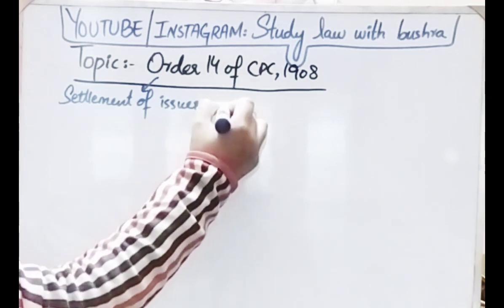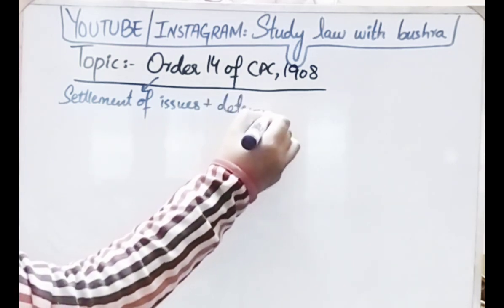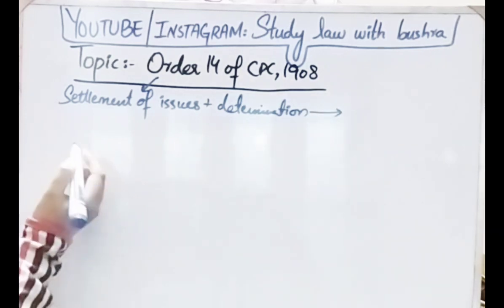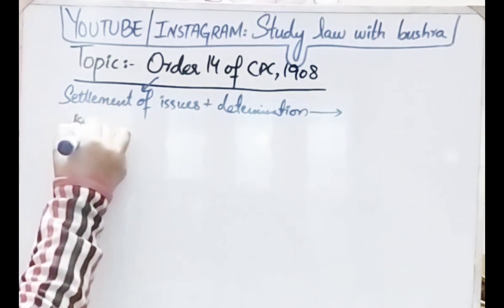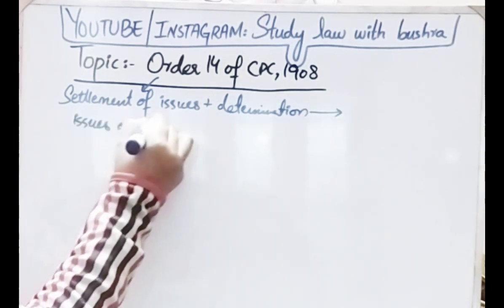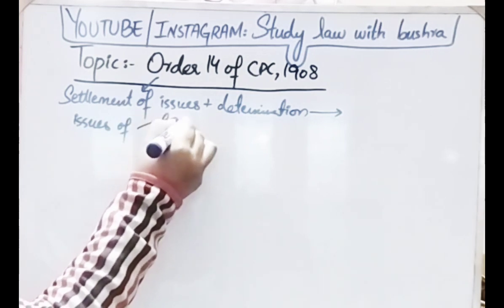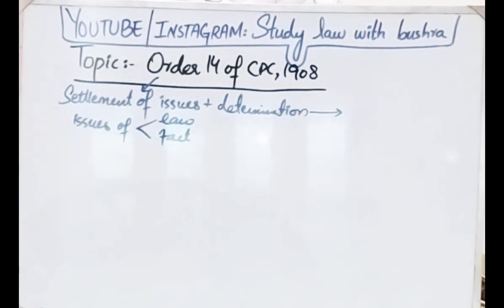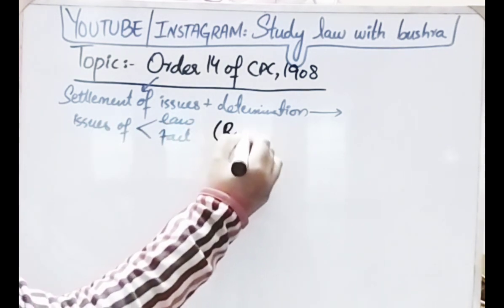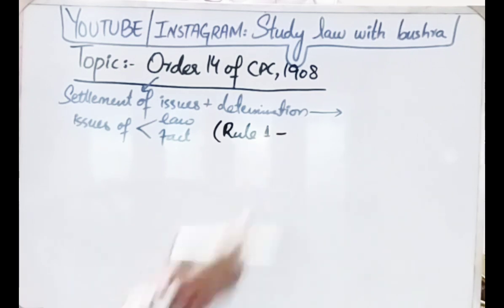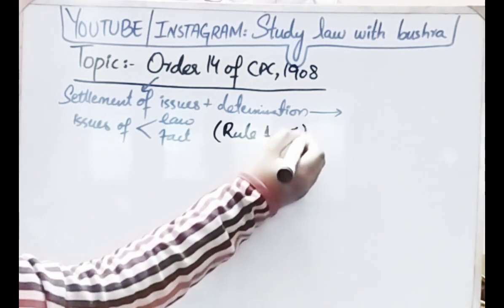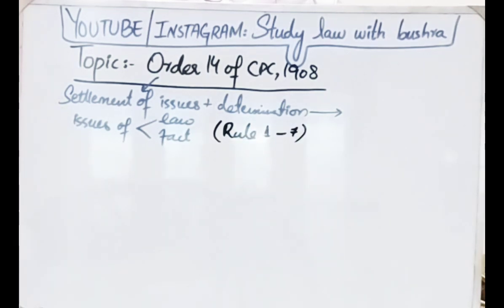Order 14 of CPC deals with the topic of settlement of issues and determination of suit on the issues of law or on the issues agreed upon. Basically Order 14 deals with the topic of framing of issues, and it contains rules 1 through 7, which we will discuss one by one.